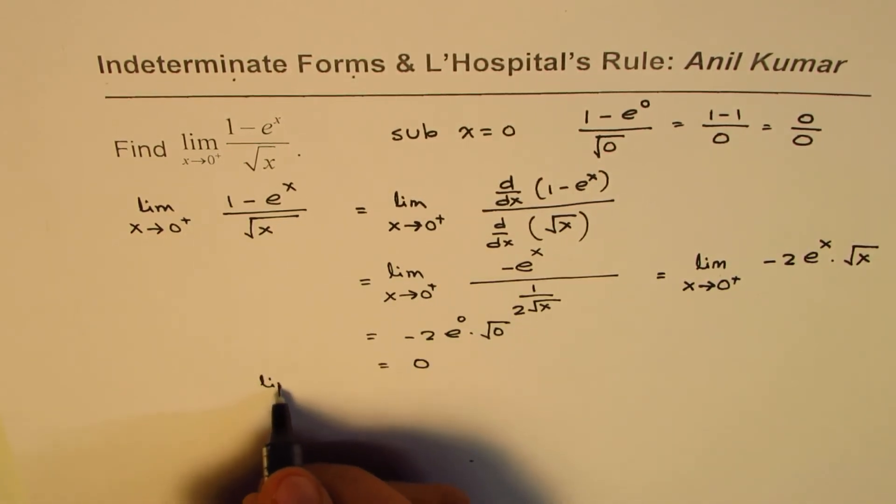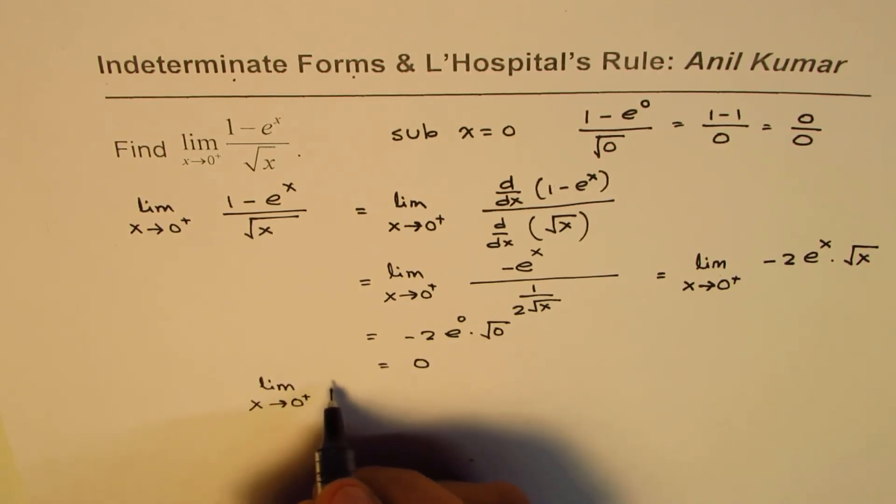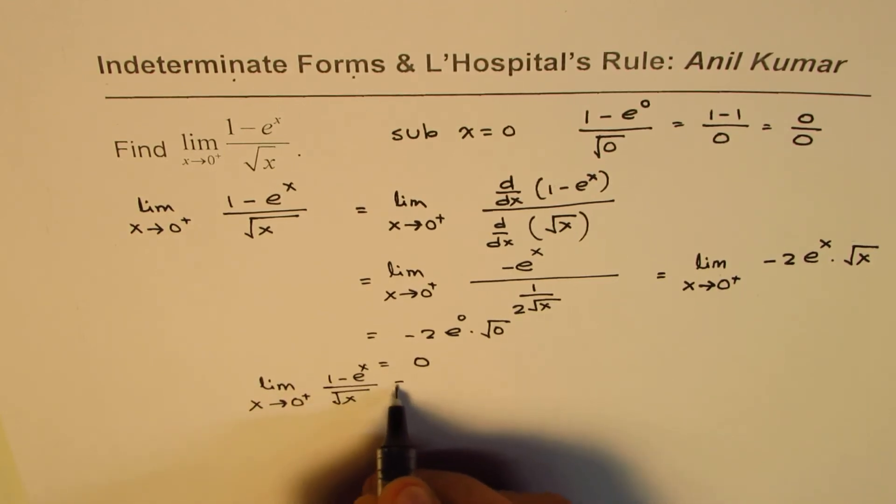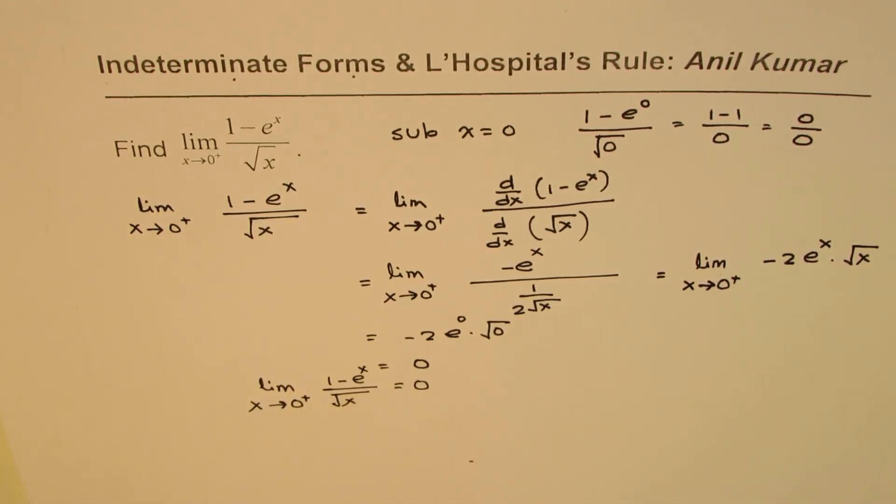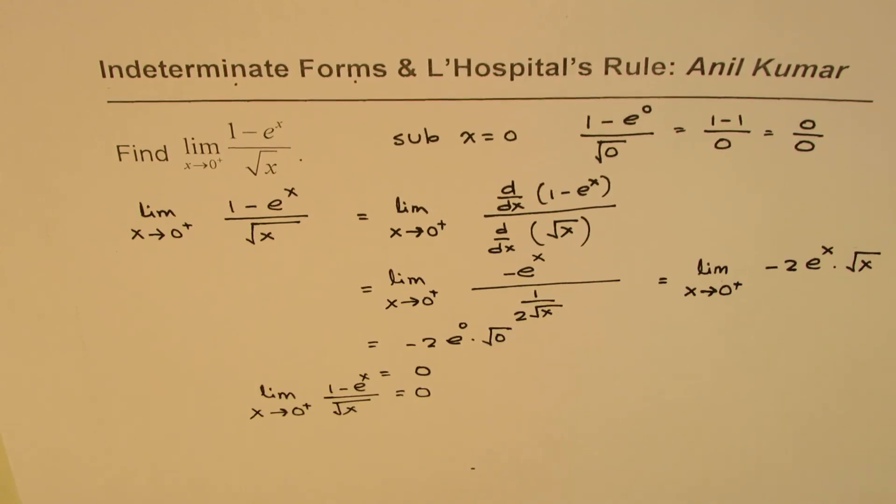square root of x is indeed equal to 0. And that is how we solve it. I hope that helps, thank you and all the best.